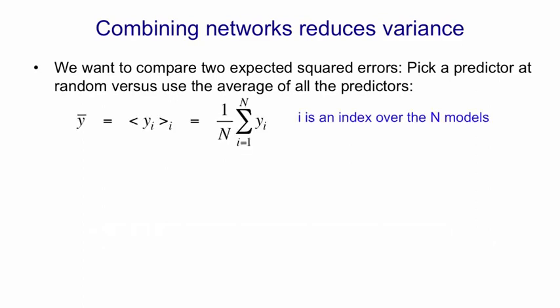So y bar is the average of what all the predictors say, and yi is what an individual predictor says. y bar is just the expectation over all the individual predictors i of yi. I'm using those angle brackets to represent an expectation, where the thing that comes after the angle bracket tells you what it's an expectation over. We can write the same thing as one over N times the sum over all the N of the yi.